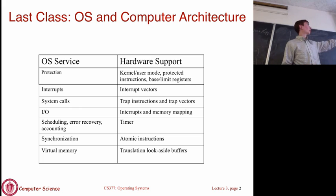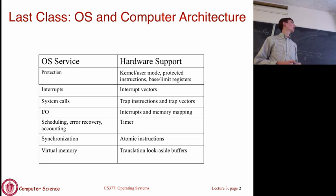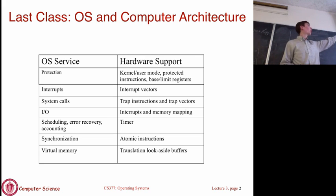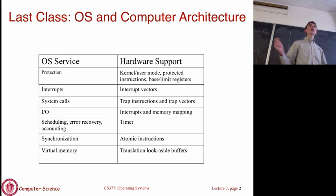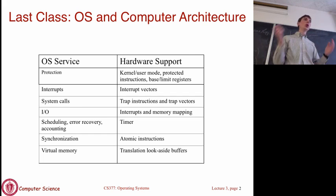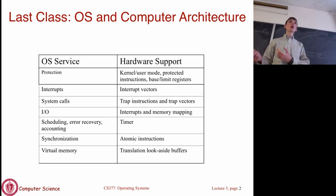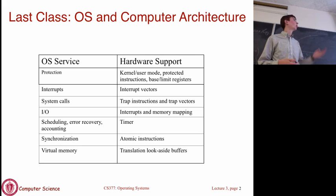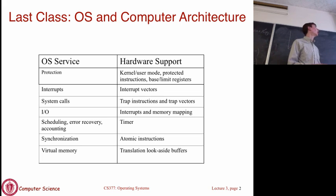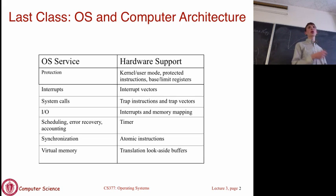Just to give a quick refresher: we talked about user and kernel mode. You can take the assembly instructions your architecture offers and partition them into regular instructions and sensitive instructions. Sensitive instructions can only be executed when the machine is operating in kernel mode, which is a way to protect processes from interfering with each other or with the OS itself.